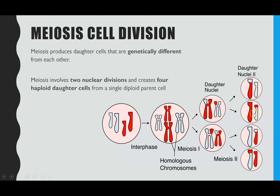Haploid means you only have one set of the chromosomes. Looking back at our parent cell before interphase, we have two copies of the longer chromosome — one blue, one red — and two copies of the short chromosome. But at the end of meiosis, each of the four daughter cells only has one copy of each chromosome: one long, one short. The parent cell is diploid because it has two copies.